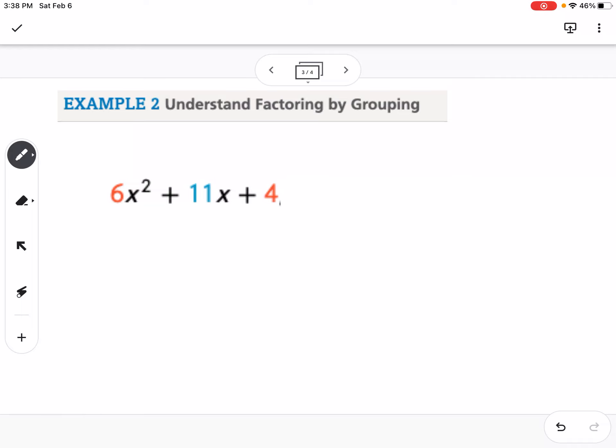Okay, so the first thing that I need to do is I am going to multiply the outer two numbers. So 4 times 6 is 24. So I'm going to multiply those, and I need to, just like we did with leading coefficient of 1, find two numbers that multiply to 24 and add to my middle number, which is 11. So I'm going to find factors of 24. So 24 could be 1 and 24, 2 and 12, 3 and 8, or 4 and 6.